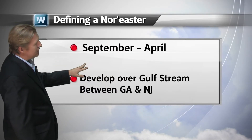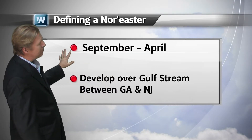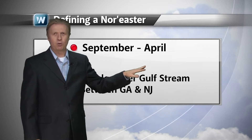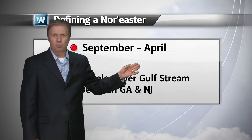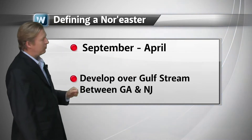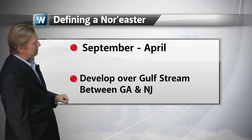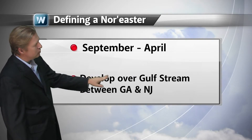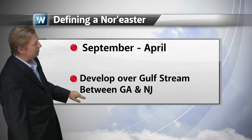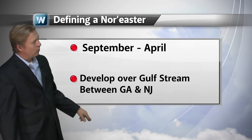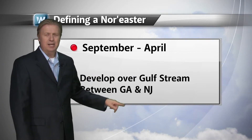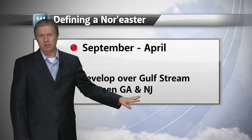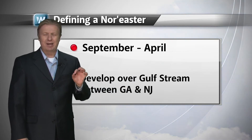Typically, we'll see these occur between the months of September and April. It can start as late as October, but will always go until typically around April. They usually do develop over the Gulf Stream, originating around Georgia and up towards the New Jersey coast.